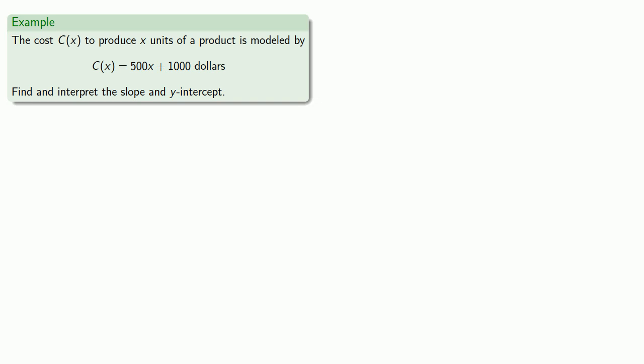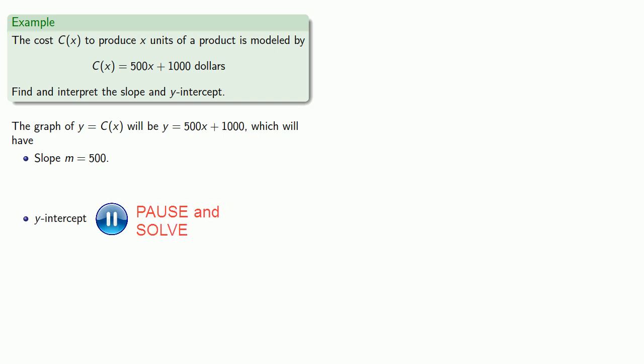Well, finding the slope and the y-intercept is easy. The graph of c(x) will be y equals 500x plus 1000, which will have slope m equal to 500, and y-intercept (0, 1000). So these are the values.